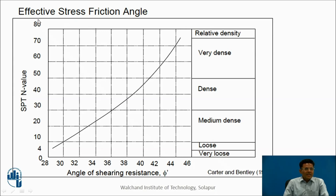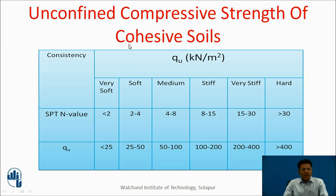Once we have the corrected SPT N value, one can estimate the relative density of soil as very dense, dense, medium dense, loose, or very loose, and accordingly estimate the angle of shearing resistance φ. For example, if the corrected SPT N value is 30, one can estimate the angle of shearing resistance as 36°; if it is 40, the angle would be around 30°. For cohesive soils, the unconfined compressive strength Qu can also be estimated — for example, an SPT value between 4 and 8 corresponds to Qu of approximately 50 to 100 kN/m².